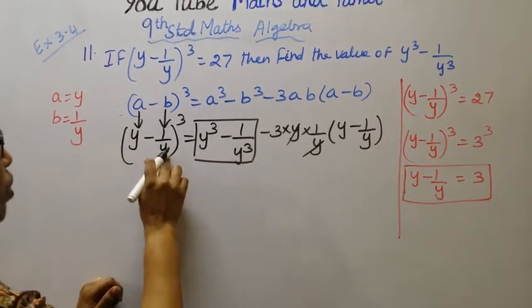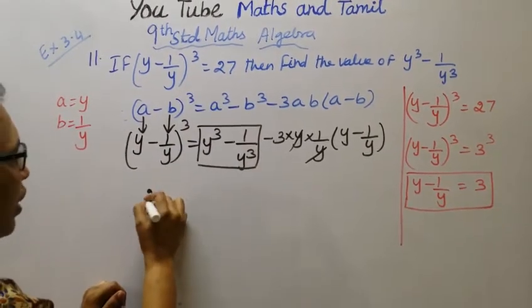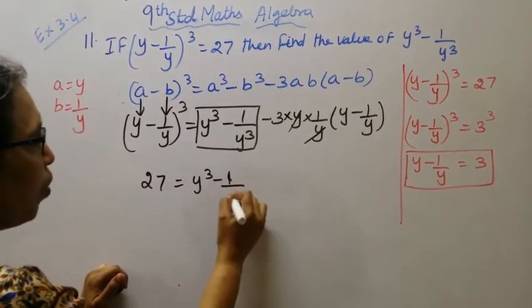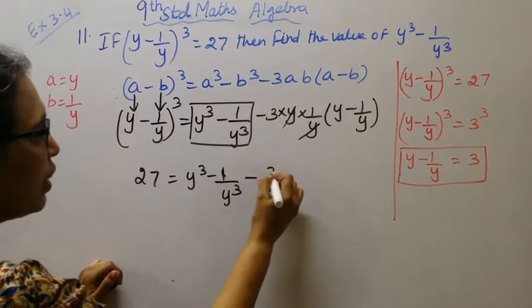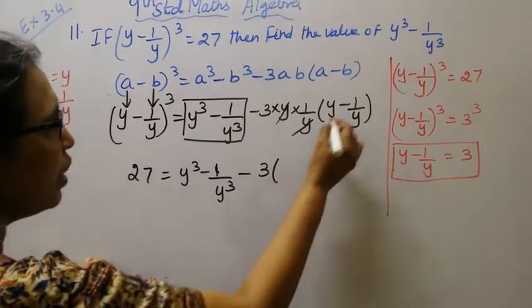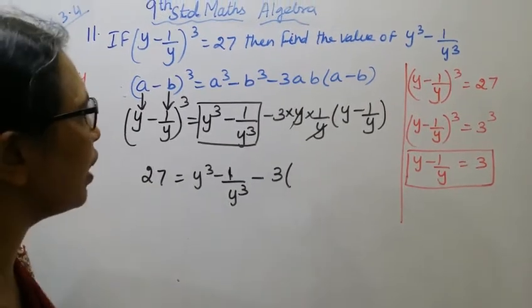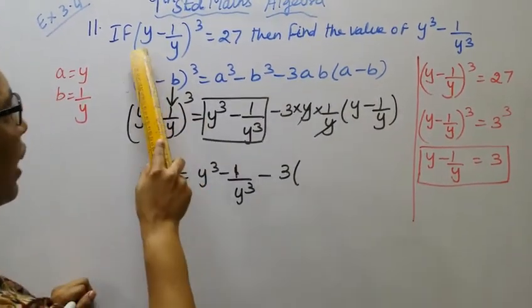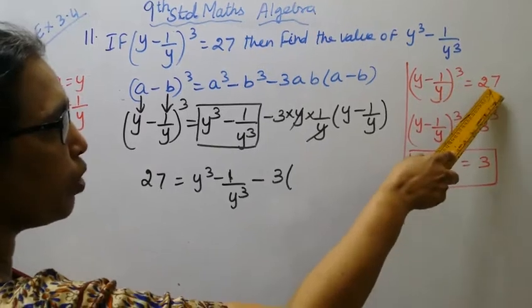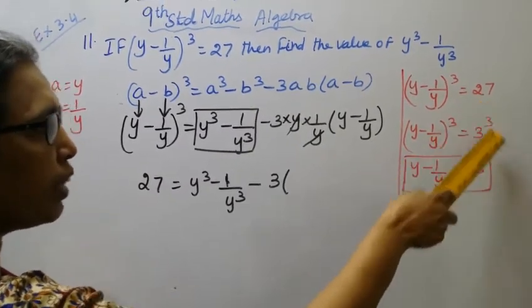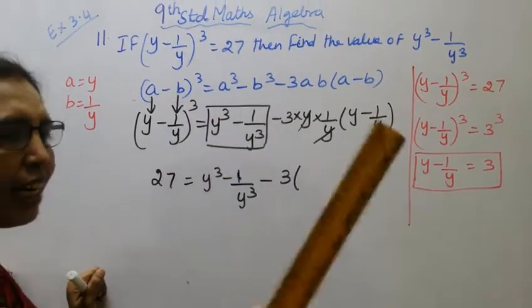y minus 1 by y the whole cube, what is given? 27. Equals y cube minus 1 by y cube minus 3 bracket, times y minus 1 by y.